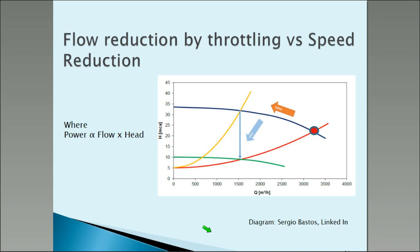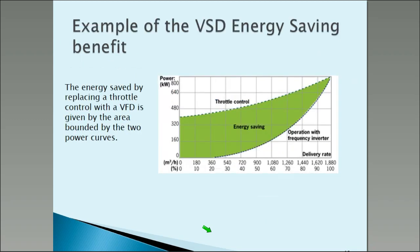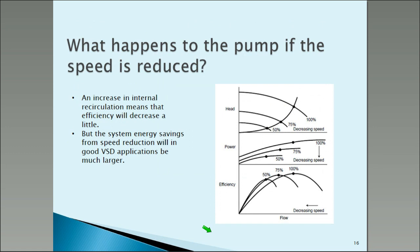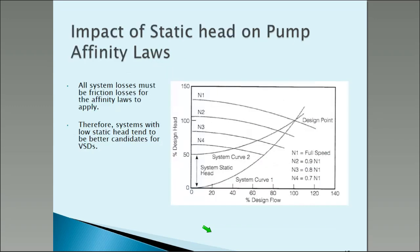That is why variable speed drives to reduce flow are really good. This curve emphasizes that — obviously, throttling will save some energy, but a variable speed drive or frequency inverter saves a lot more. The point is you don't have to reduce the flow by much to be in the big saving zone. Obviously the head will come down a lot, which is good. The efficiency of the pump will fall a little bit, but the loss of efficiency will be much less than what we're saving on the power. For most systems, you really don't have to worry about the actual pump performance itself.